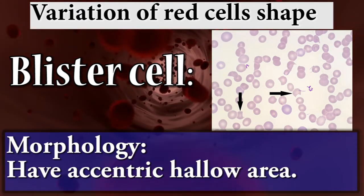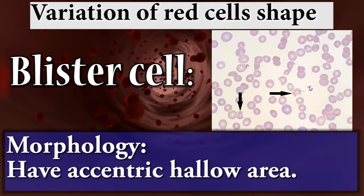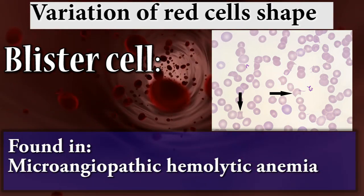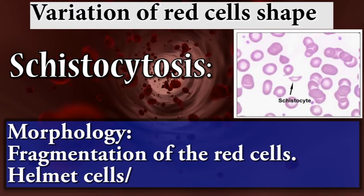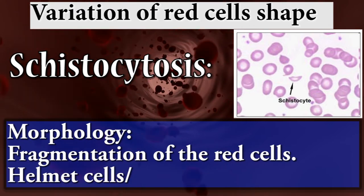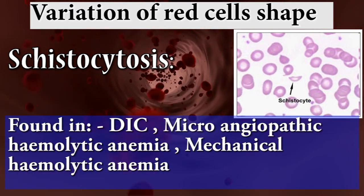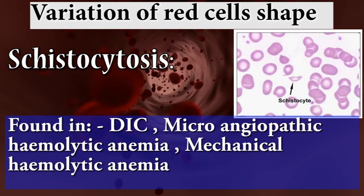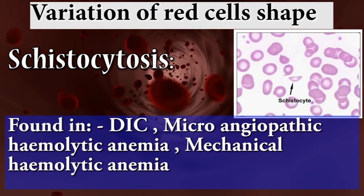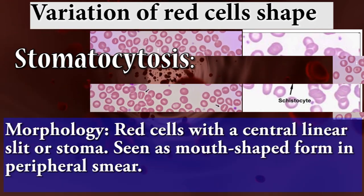The sixth shape variation is blister cells: morphology shows an eccentric halo area, found in microangiopathic hemolytic anemia. Next is schistocytosis: fragmentation of red cells producing helmet cells. Found in disseminated intravascular coagulation, microangiopathic hemolytic anemia, and mechanical hemolytic anemia.